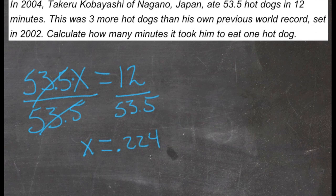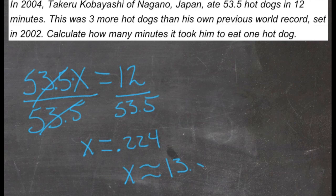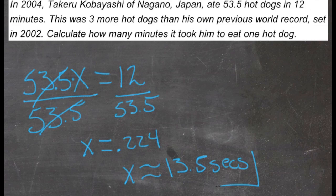Now if we want to know how many seconds that is, we could multiply 0.224 by 60 and get about 13 and a half. So x would be about 13.5 seconds. 13 and a half seconds per hot dog for 53 and a half hot dogs. Wow.